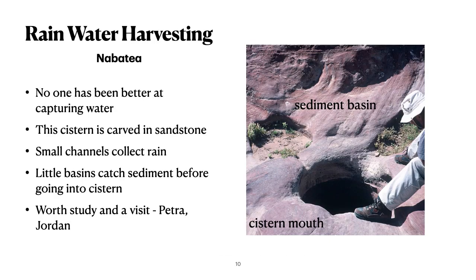To really understand rainwater harvesting, it's worth a trip to the literature about Nabatea, or better yet a field trip to Nabatea in Jordan and Israel. No one has ever done a better job at capturing rainwater. Here I'm sitting at a cistern carved in sandstone. The cistern itself is a fairly large container underneath, and it was once plastered to help retain water so the water didn't seep into the sandstone. Small channels going out from here collected the rainwater, brought it into a little basin for the sediment to drop out, and then trickled into the catchment and into the cistern itself.